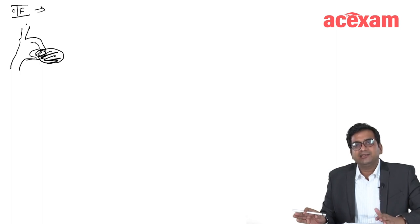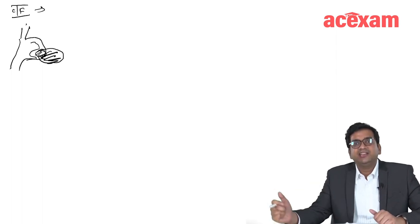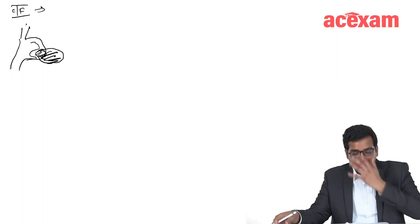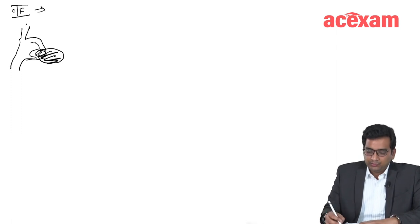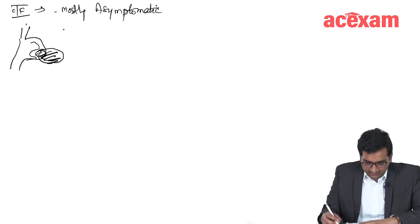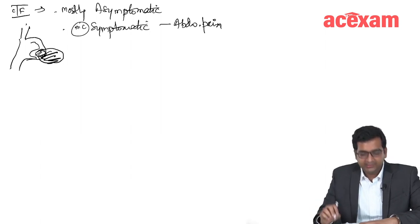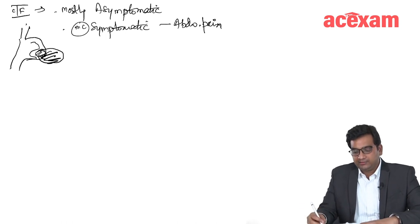The most common symptom in GIST is abdominal pain. This is also true. You have to read the line very carefully what the examiner is writing. Mostly it is asymptomatic, but the most common symptom is abdominal pain. This abdominal pain is followed by bleeding.